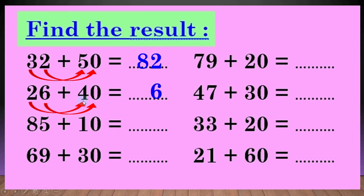another question: 26 plus 40. الـ ones مع الـ ones: 6 plus 0 equal 6. والـ tens مع الـ tens: 2 plus 4: بعد 4، 5، 6. يبقى الانسر طلع 66. احنا بقى ناس شطار - مش لازم نوصل الـ ones بالـ ones والـ tens بالـ tens. اللي على اليمين مع اللي على اليمين. الـ 5 will be down. 8 plus 1: بعد 8، 9. يبقى الانسر طلع 95.